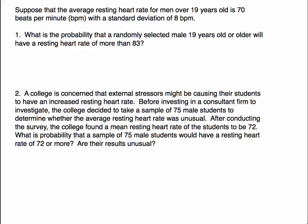We want to suppose that the average resting heart rate for men over 19 years old is 70 beats per minute with a standard deviation of 8. So I'm going to immediately write down what I know: the population mean is 70 and the population standard deviation is 8. That's a good place to start.